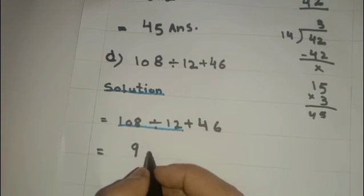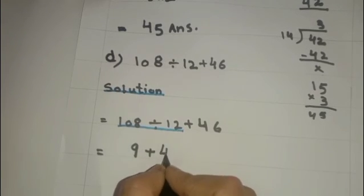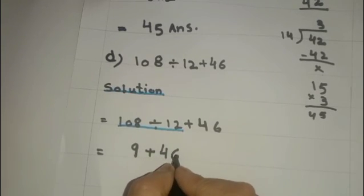108 divided by 12 is equals to 9. After that we have to do addition.